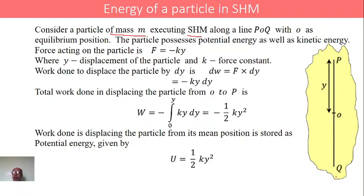The force acting on such a particle exhibiting simple harmonic motion about mean position O is given by F equals minus ky, where k is called the force constant and y is the displacement at any instant of time. Such a particle performing SHM is said to possess both potential energy and kinetic energy.